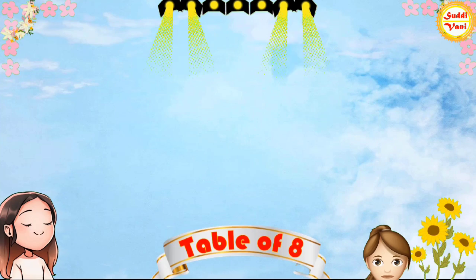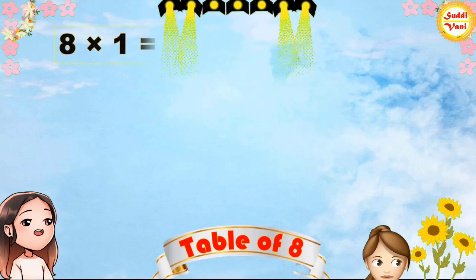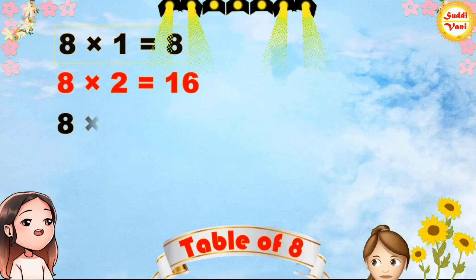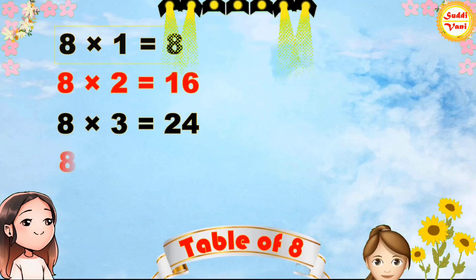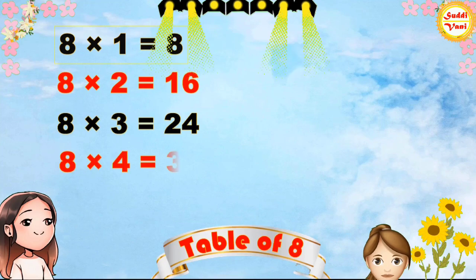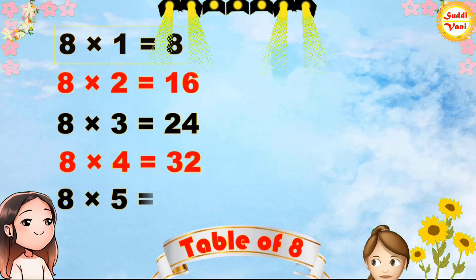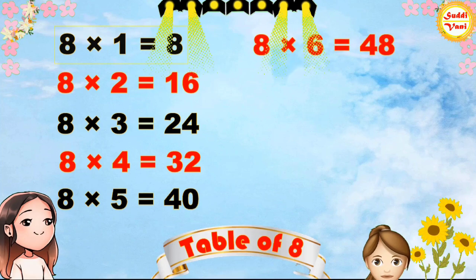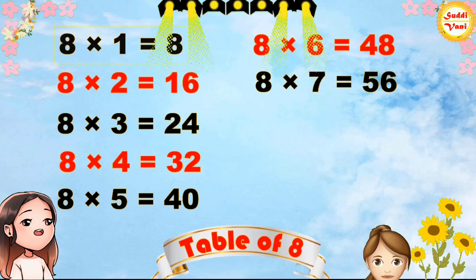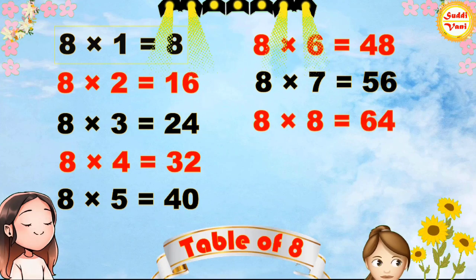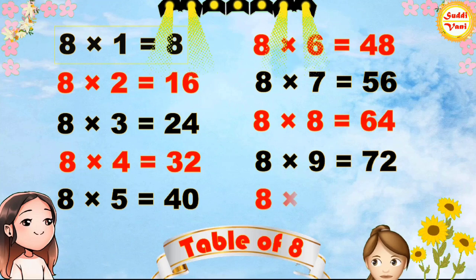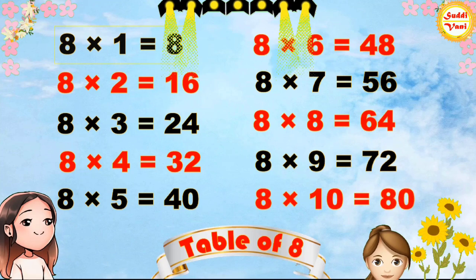Once again: 8 × 1 = 8, 8 × 2 = 16, 8 × 3 = 24, 8 × 4 = 32, 8 × 5 = 40, 8 × 6 = 48, 8 × 7 = 56, 8 × 8 = 64, 8 × 9 = 72, 8 × 10 = 80.